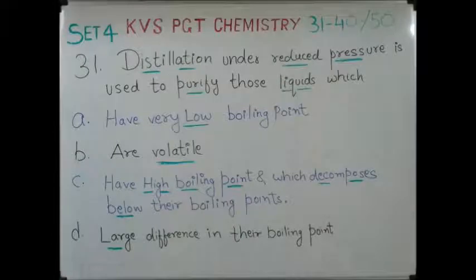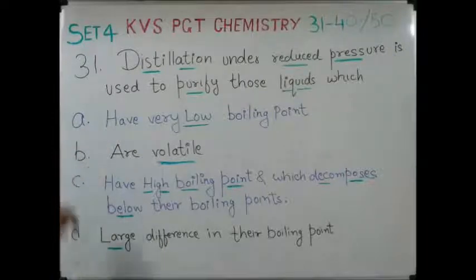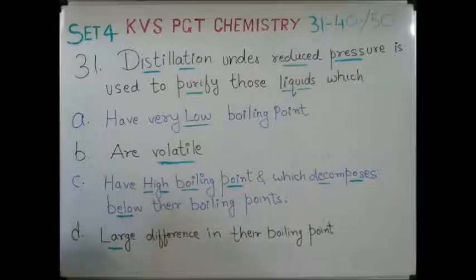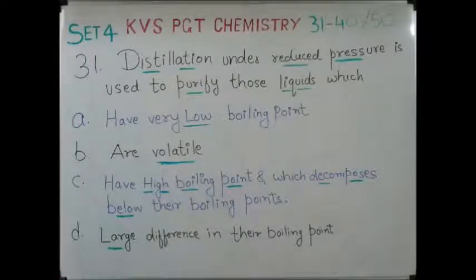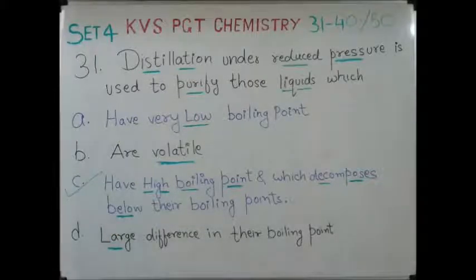The very first question: distillation under reduced pressure is used to purify those liquids which (A) have very low boiling point or are volatile, (B) have high boiling points and decompose below their boiling points, or (C) have a large difference in their boiling points. We know this answer — we use it when liquids have very high boiling points and decompose below their boiling points. The correct answer is C.